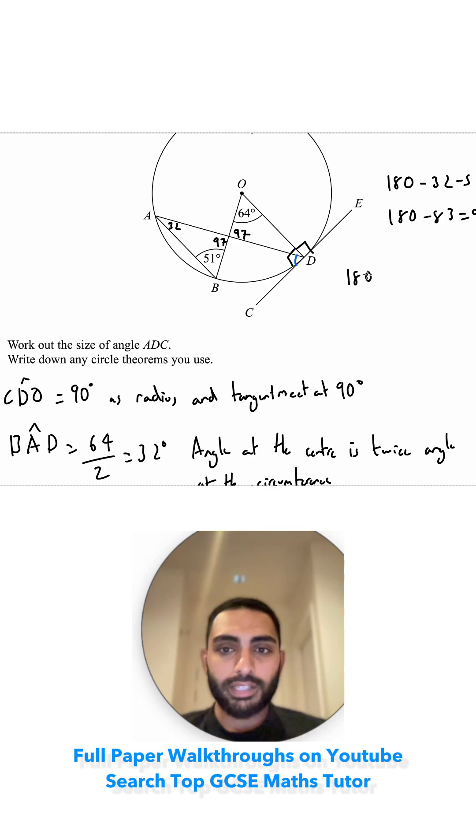That'd be 180 minus 97 minus 64. So 64 and 97 you could do 100 plus 61. So 180 minus 161 is equal to 19.